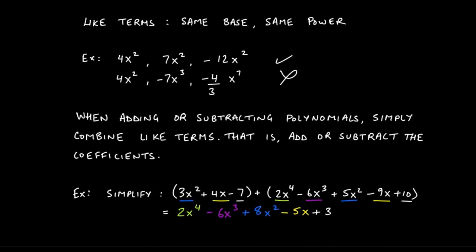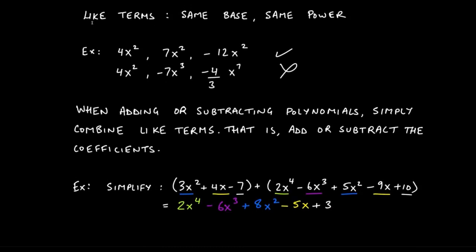Before we start adding and subtracting, we first need to understand what like terms are. Like terms are terms that have the same base and the same power. For instance, 4x squared, 7x squared, and negative 12x squared — the coefficients 4, 7, and negative 12 are all different, but that doesn't matter. What I care about is the base and the power. These all have base x and power squared, so these three are like terms.